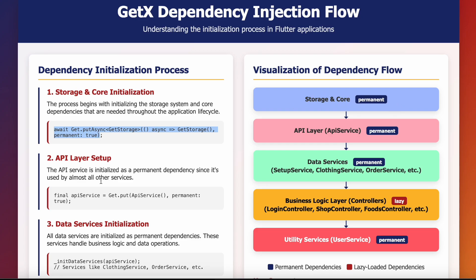Storage should be at the top, and then comes the API layer. Once GetStorage is initialized — for example, if you have authentication tokens or saved data — you'll want to communicate back to your server. That's why you initialize your API layer next, setting up your base URL, basic structure, port, and everything else that defines how your application communicates with the backend.